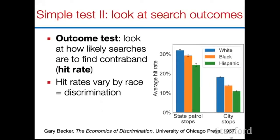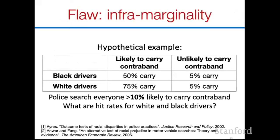But higher search rates alone don't prove discrimination, because it's possible some races are more likely to carry contraband. A second test proposed to address this is the outcome test: you look at how likely a search is to find contraband — the hit rate. The intuition is that if searches of white drivers find contraband 90% of the time but searches of Black drivers only 10% of the time, police are searching Black drivers on the basis of relatively little evidence. When you run this analysis, you do see hit rates are lower for Black and Hispanic drivers in both state and city stops, suggesting discrimination against minority groups.